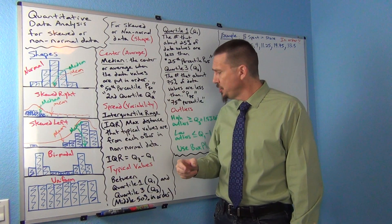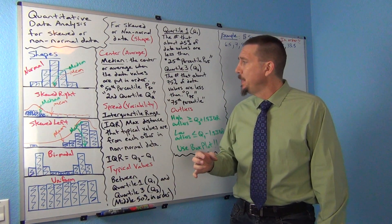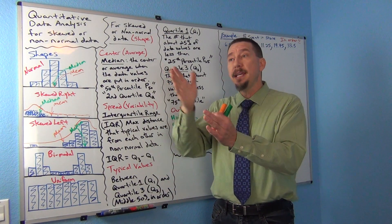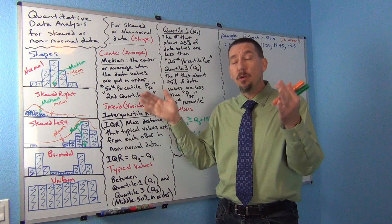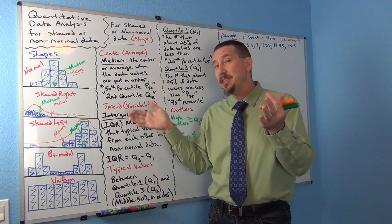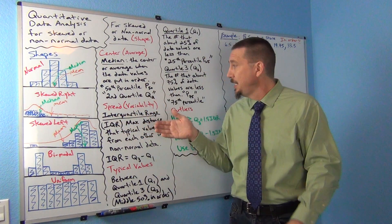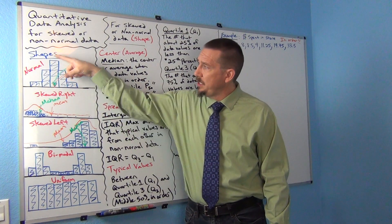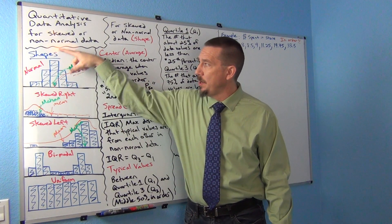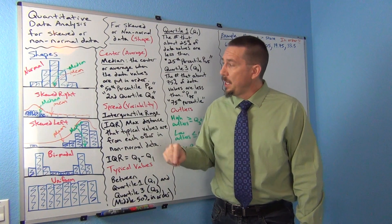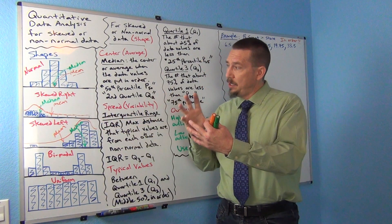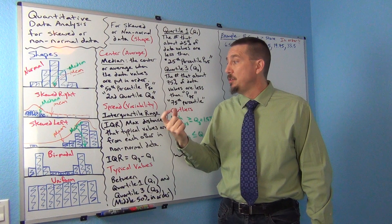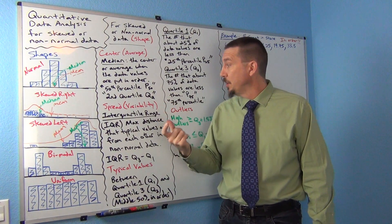If we go one standard deviation from the mean in normal data, that's about the middle 68%. But in skewed data you have less data around the center, so we usually want the middle 50% of the numbers when they're in order.